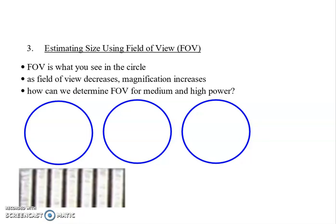So let's estimate size of things using what we call field of view in a microscope. The field of view, or FOV, is what you see in the circle. When you peer into a microscope, you see a circular location where the specimens are at. As the field of view decreases, magnification increases.